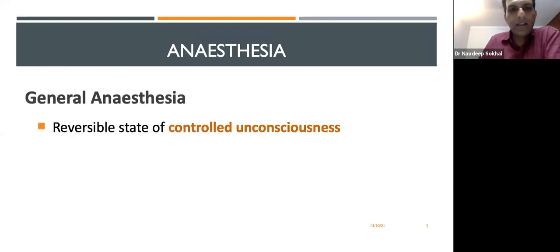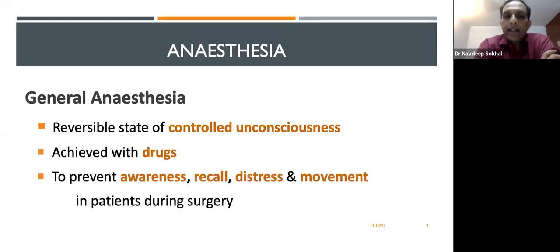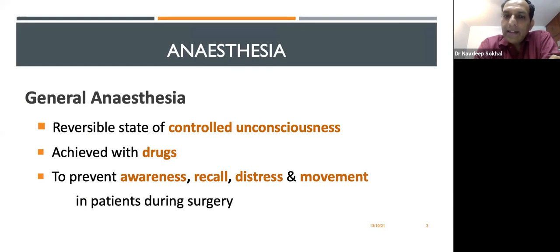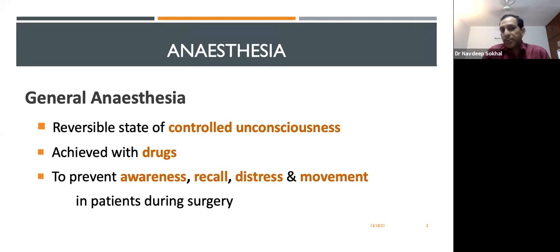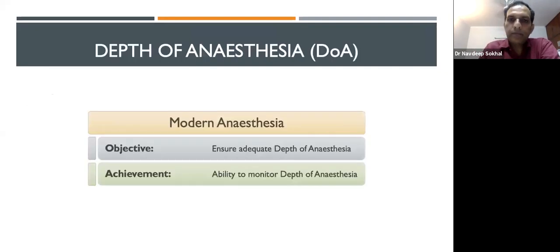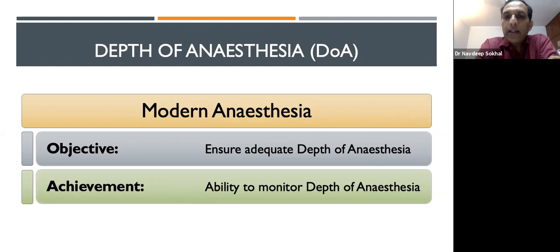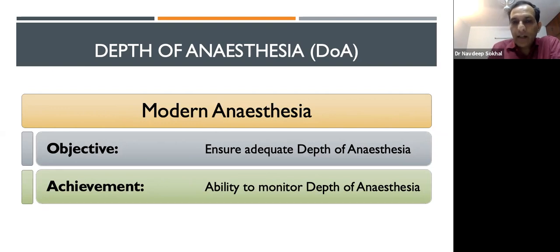General anesthesia is defined as a reversible loss of controlled consciousness achieved by drugs, with the purpose of preventing awareness, recall, distress, and movement in patients undergoing surgery. The objective of modern anesthesia is to ensure adequate depth of anesthesia, and today we have the ability to monitor and control the proper plane of anesthesia.